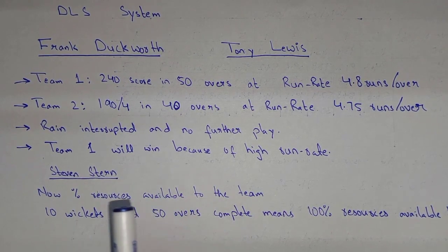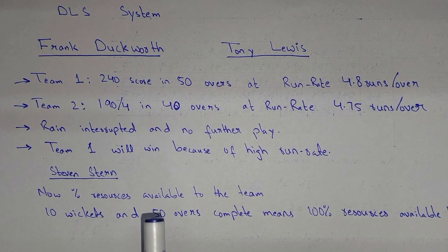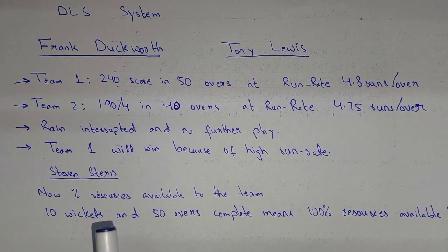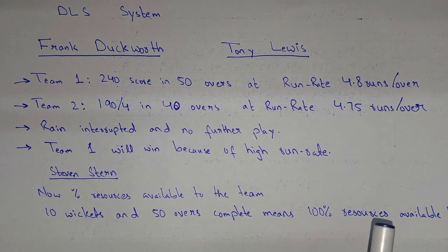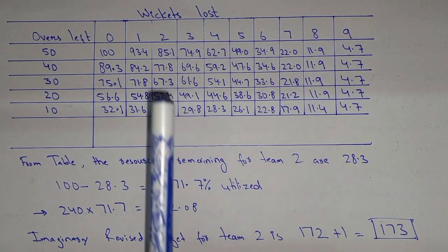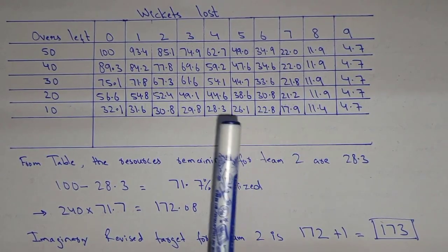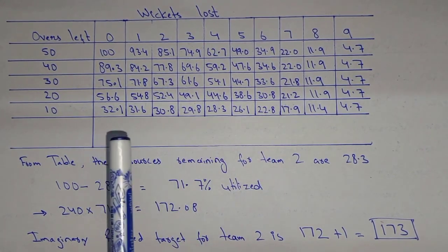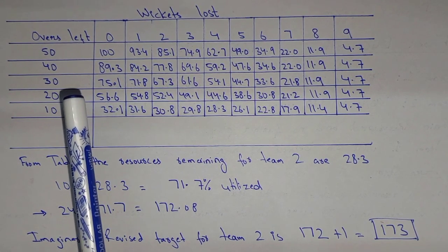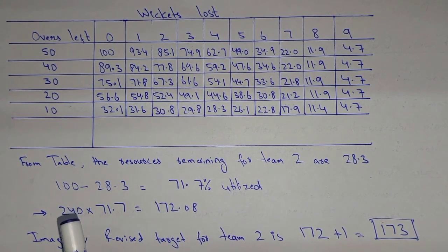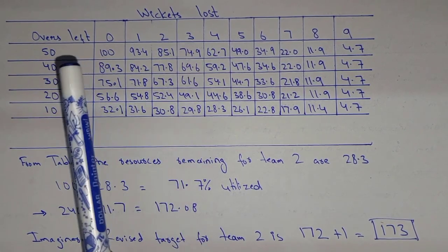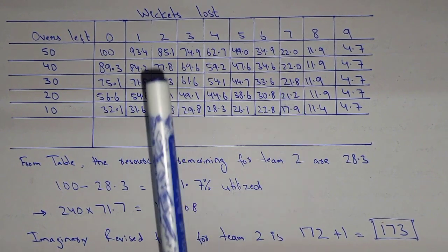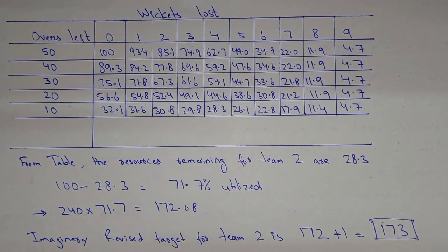According to the DLS system, there is a percentage of resources available to each team. Resources are based on wickets and overs remaining. For example, in a 50-over game with 10 wickets left and all 50 overs remaining, 100% resources are available. I have taken this data from the ICC website; you can find the complete table there covering overs from 1 to 50 in full detail.